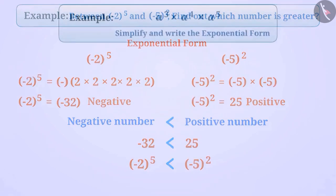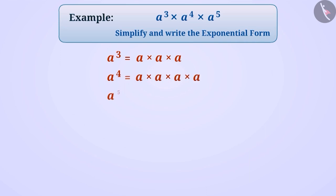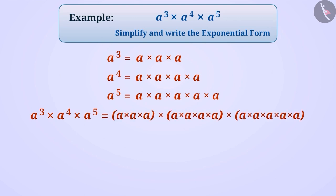Next example: write a raised to the power of 3 multiplied by a raised to the power of 4 and a raised to the power of 5 in exponential form. We can write a raised to the power of 3 as a multiplied by a multiplied by a. Similarly, we can express a raised to the power of 4 and a raised to the power of 5. Substituting these values, we see that a has been multiplied by itself a total of 12 times. So, we can write this as a raised to the power of 12.